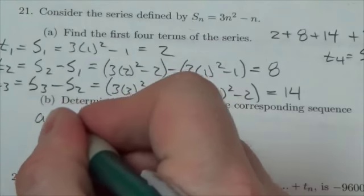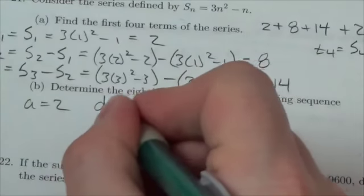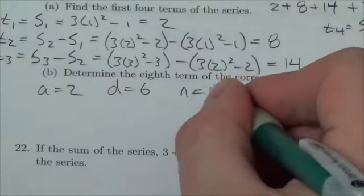our A value here is going to be 2. The D value is going to be positive 6. And if we're looking for the 8th term, that means N is equal to 8.